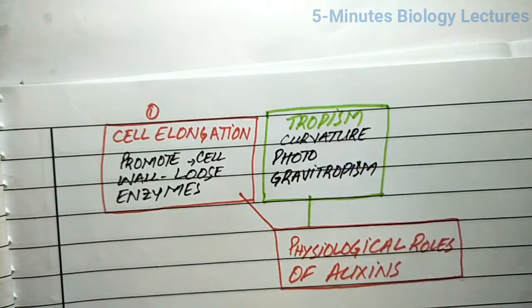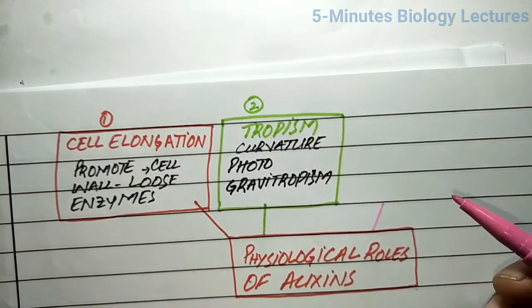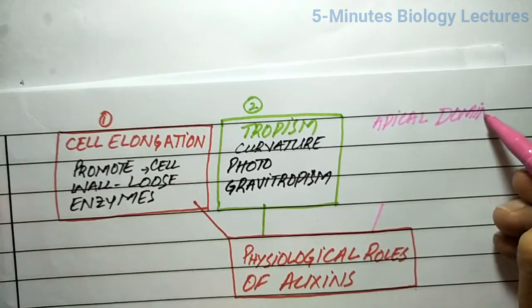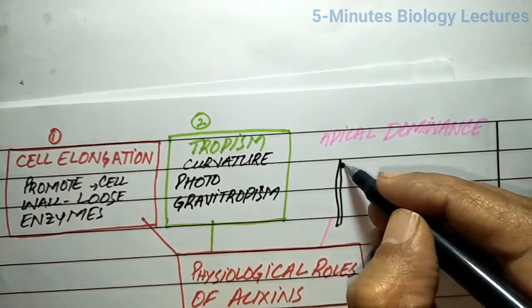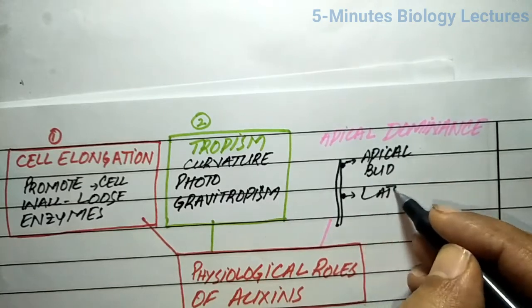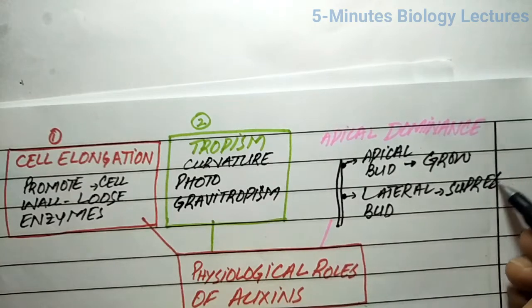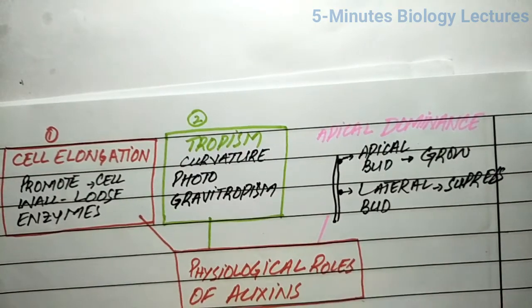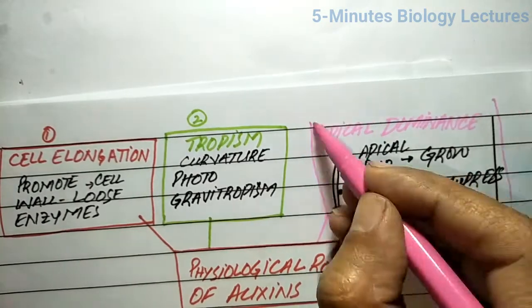Apical dominance is another important role played by auxins. Apical dominance is the condition in which the apical bud continues to grow whereas the lateral buds remain inhibited. It may be due to the production of auxins in the apical region. Higher levels of auxins in the apical region cause the movement of nutrients towards the apical bud, so the apical bud continues to grow.